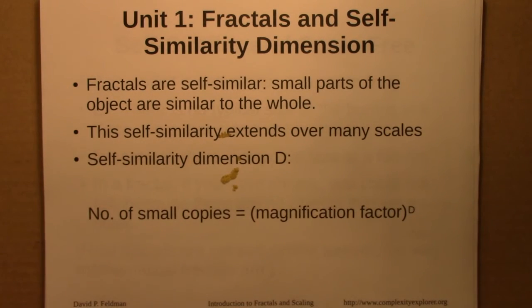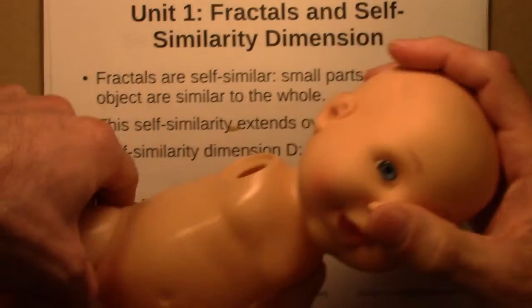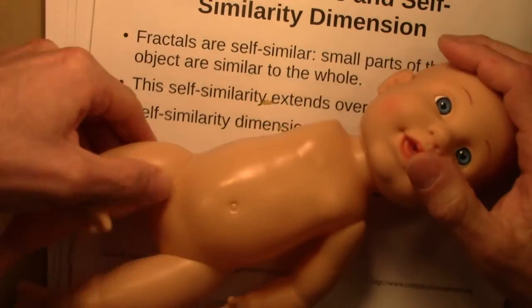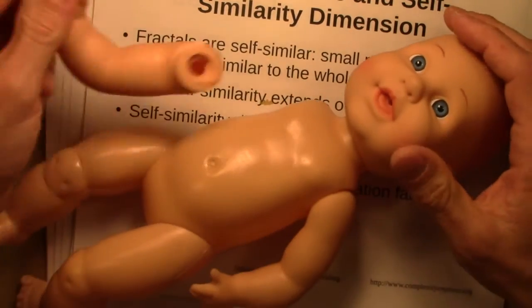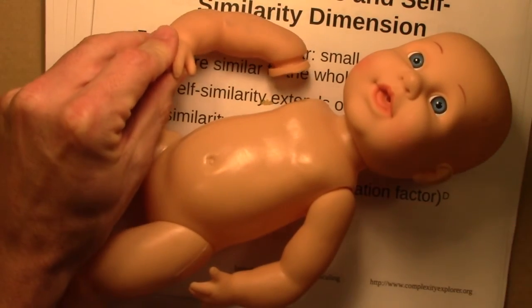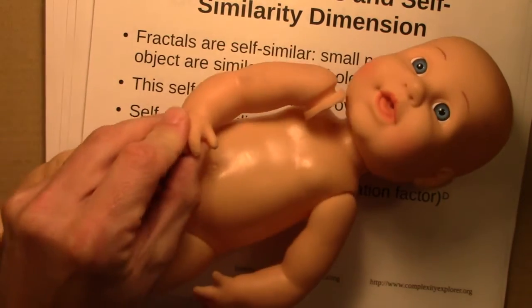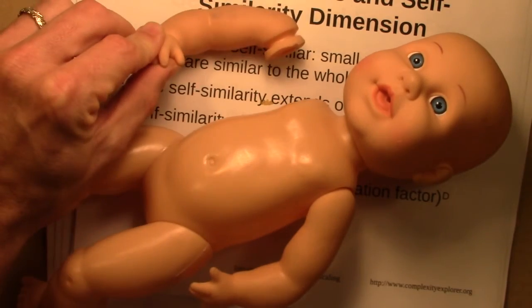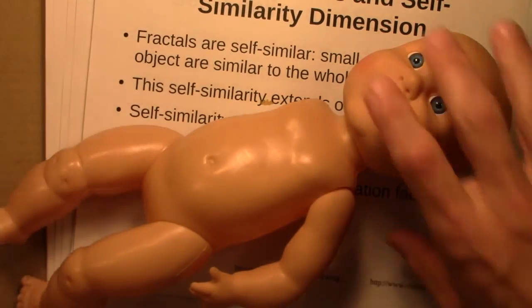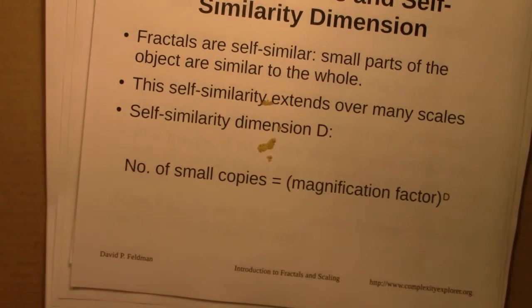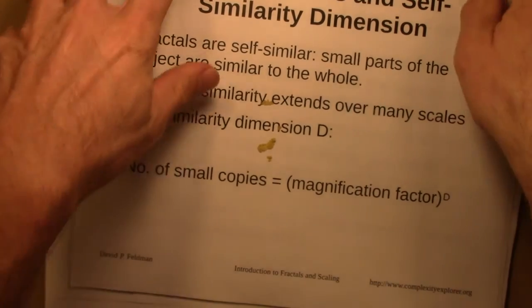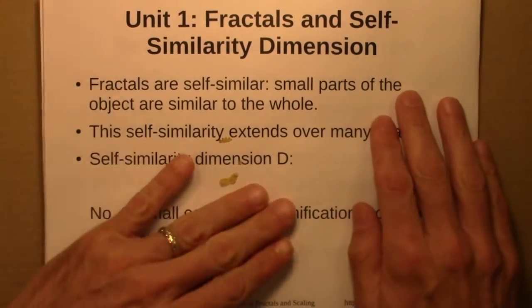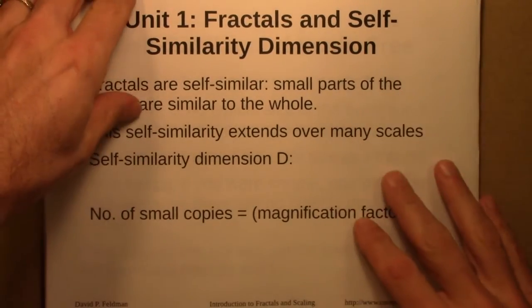The counter-example we used was a person. If you have a person and you break a part of the person off, what you have doesn't look like a small little person — it looks like a creepy little arm. So that's a quick reminder of that.